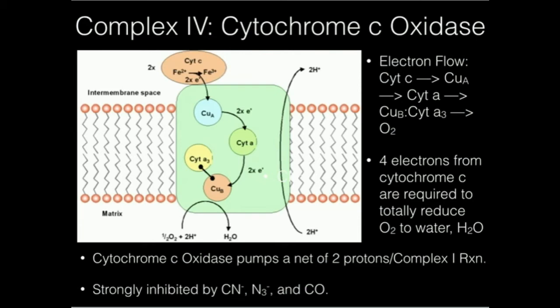Another important thing about cytochrome c oxidase is it pumps two protons from the matrix down here into the intermembrane space. So remember complex one pumped four, complex three pumped four, this one pumps two, and then complex two doesn't pump any.